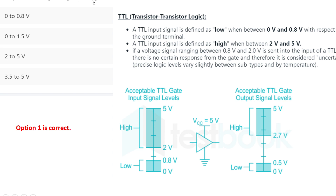The next question: what is the acceptable voltage range for logic 0 for a TTL circuit? TTL means transistor-transistor logic. The options are: 0 to 0.8V, 0 to 1.5V, 2 to 5V, or 3.5 to 5V. Option 1 is correct — 0 to 0.8 volt. For logic high (logic 1), the voltage range is 2V to 5V. For output, logic 0 is 0 to 0.5V and logic 1 is 2.7V to 5V.